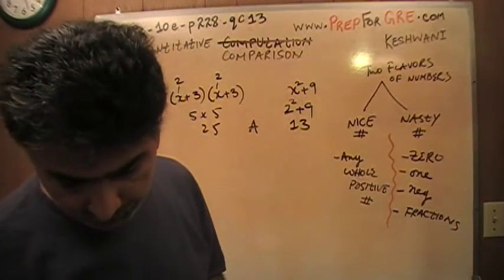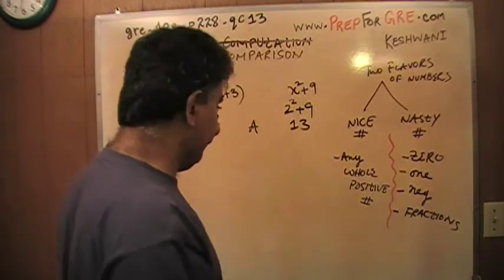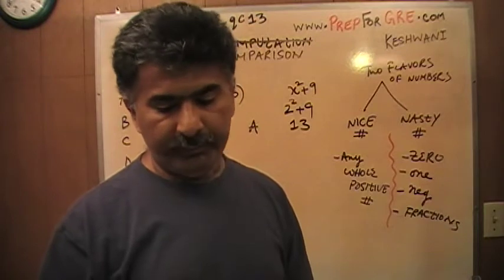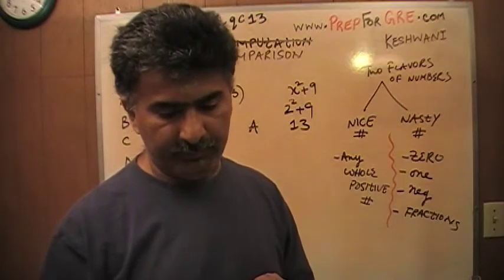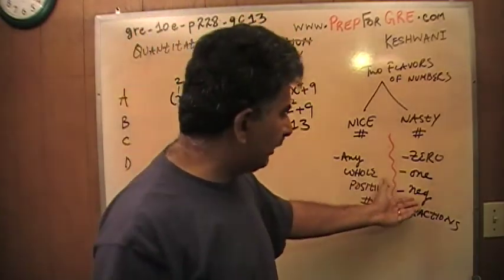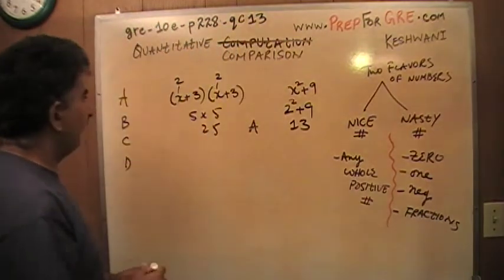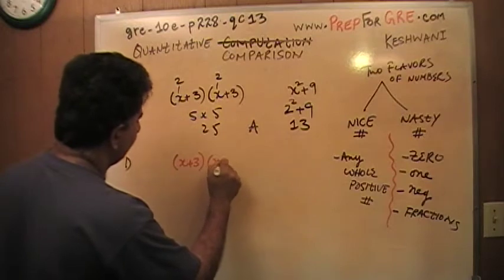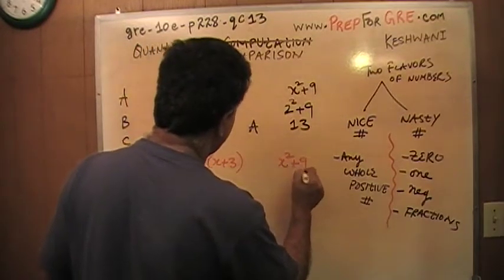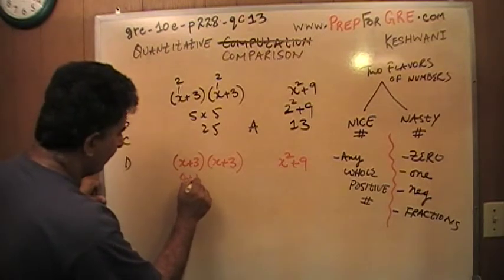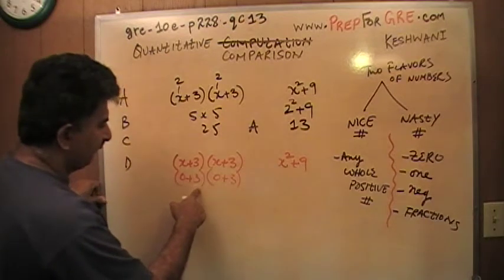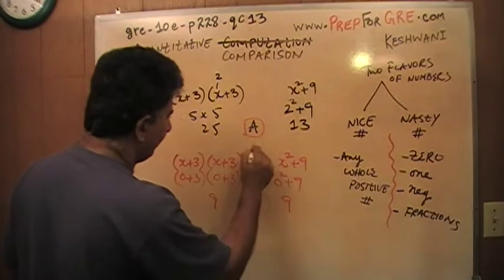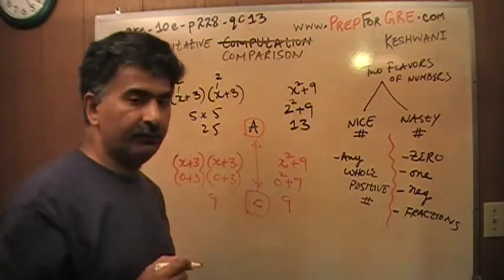They don't tell you anything about x — it could be a fraction, it could be negative, it doesn't even have to be an integer. Before worrying about negatives and fractions, let's try zero. If x equals 0, you get 0 plus 3, which is 3, times 3 is 9. And on the other side, 0 squared plus 9 also gives 9. The answer is C. Before it was A, now it's C — we have a conflicting answer, therefore the answer is D.